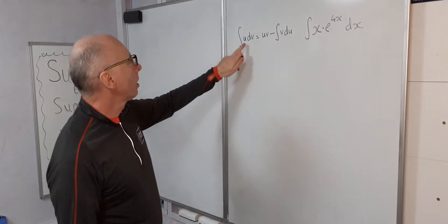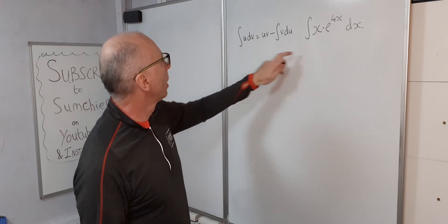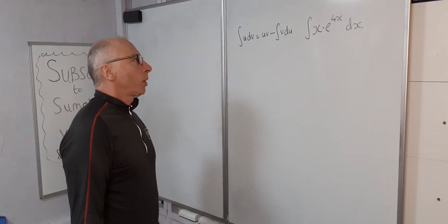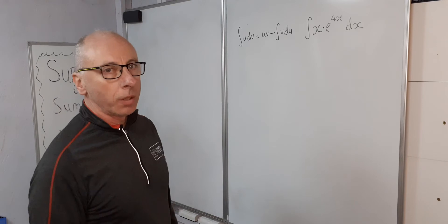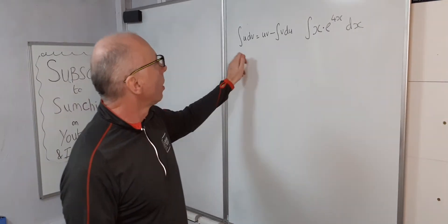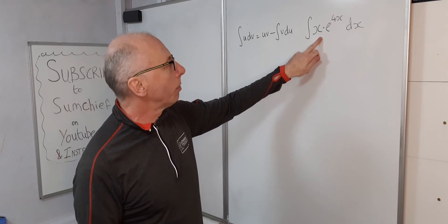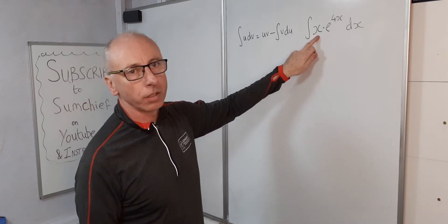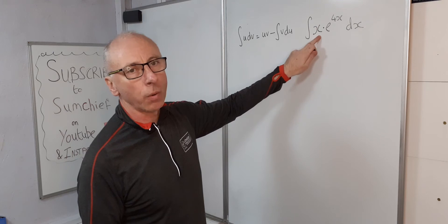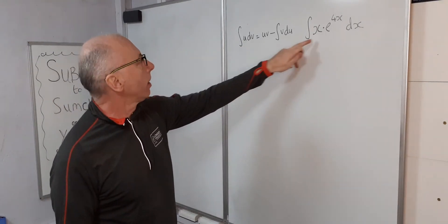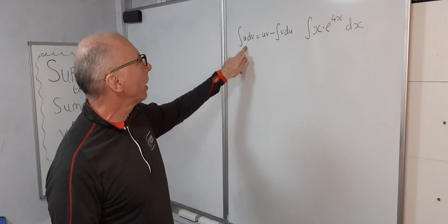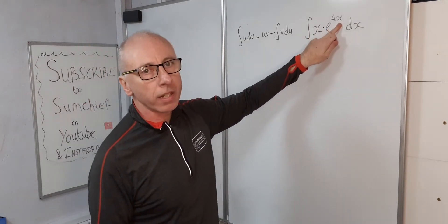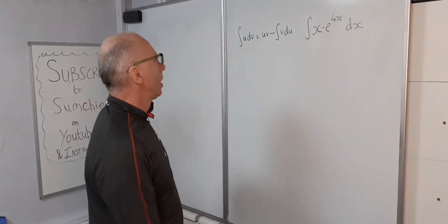Now we need to assign our variables. We've got u as one of these terms and dv as the other. The question is which way around we're going to do it. We want to set the term that's going to disappear when we take the derivative. That will be x, because the derivative of x just becomes one. We set x to be u, because the derivative of x gives us one, whereas e to the 4x will never disappear — you always end up with e to the 4x and some coefficient.